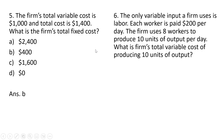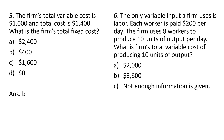Question six: the only variable input a firm uses is labor. Each worker is paid $200 per day. The firm uses eight workers to produce 10 units of output. What is the firm's total variable cost of producing 10 units of output? The total variable cost is just the wage times the number of workers: 8 times $200 equals $1,600. Answer choice D is correct.